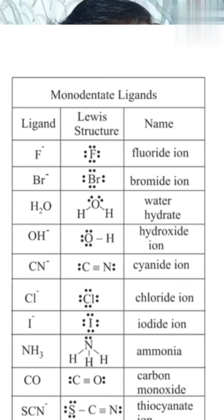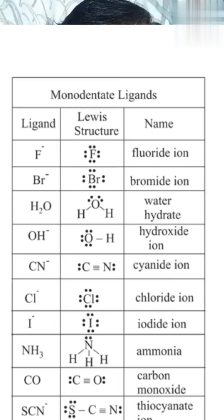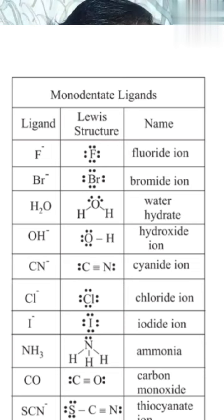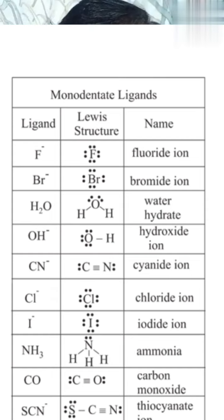Examples of monodentate ligands include Cl⁻, CN⁻, and NO2⁻ ions — these are monodentate ligands because they have only one ligating atom.